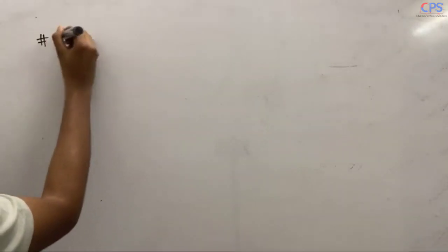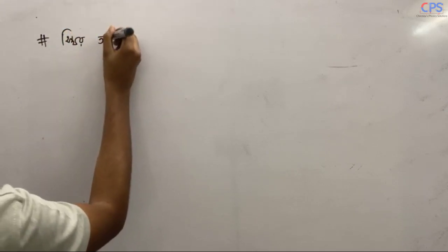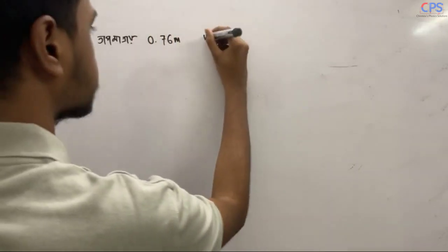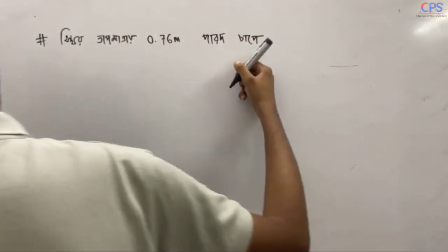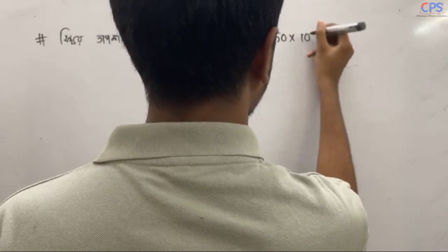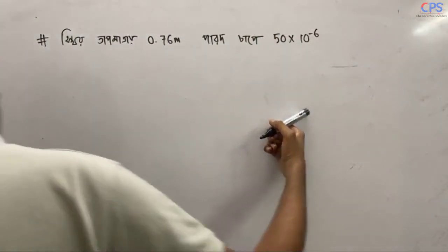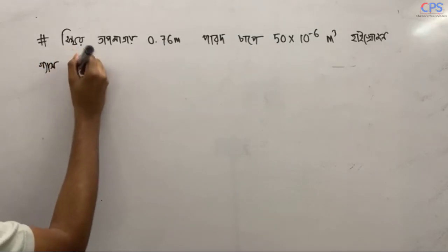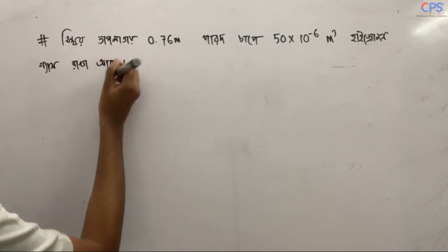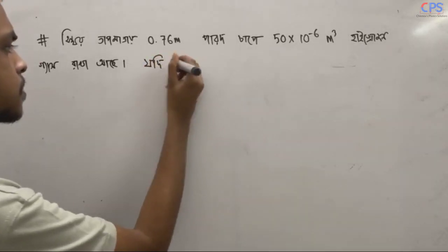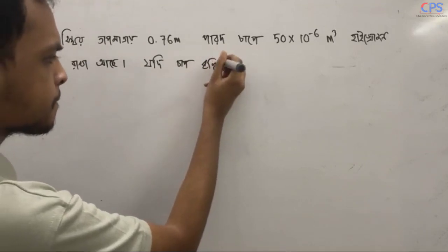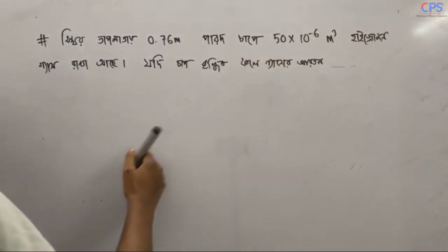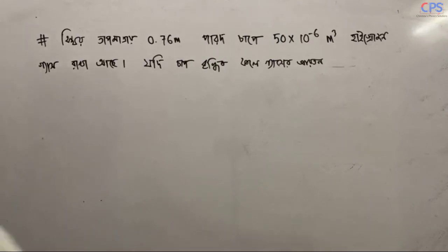Sthir Tapmatrai — at constant temperature — 0.76 meter parot chape. 5 into 10 to the power minus 6 meter cube hydrogen gas rakhach.